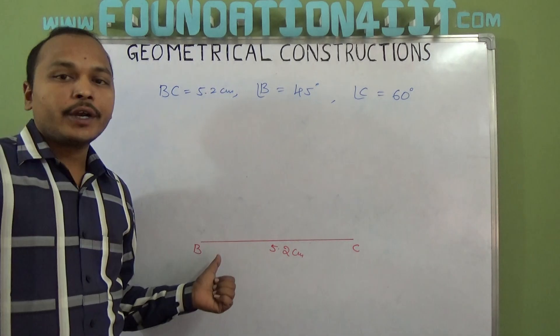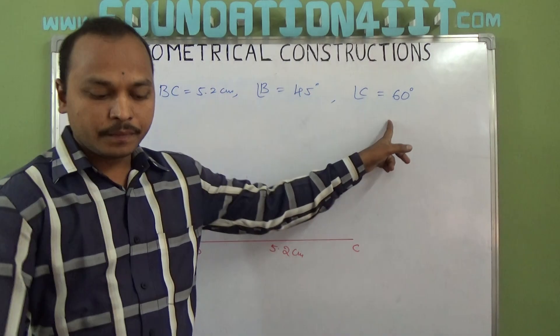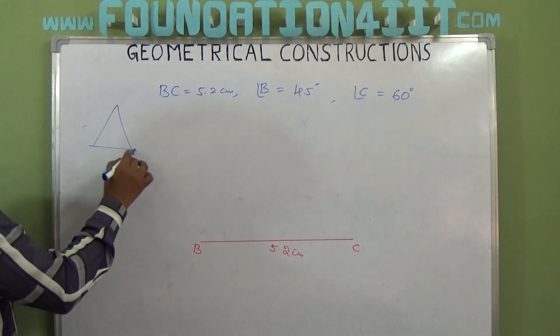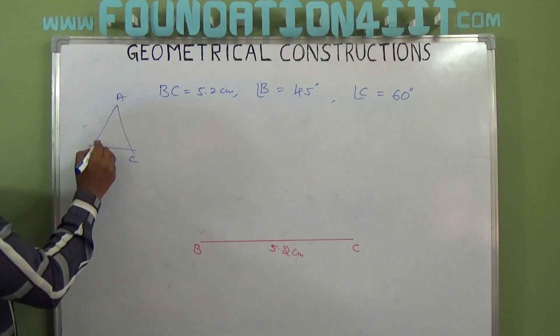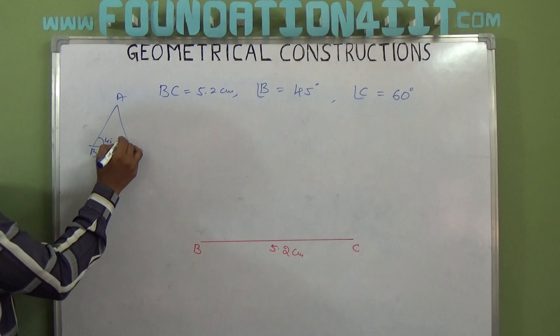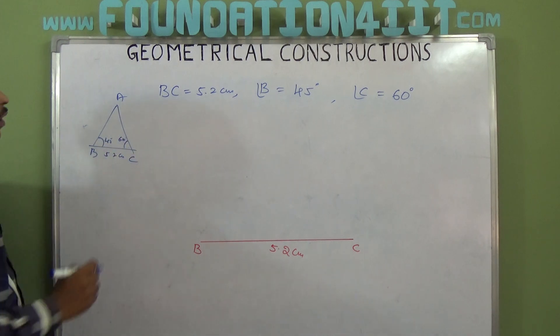Now at point B, we need to construct 45 degrees. At point C, 60 degrees. If you observe the rough diagram, angle B is 45 degrees and angle C is 60 degrees, and the distance between B and C is 5.2 cm.